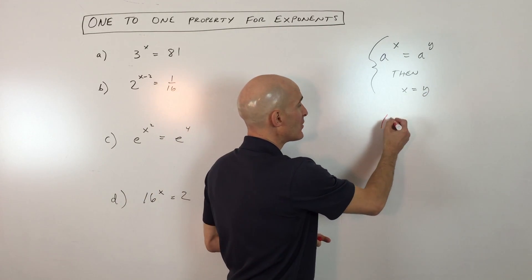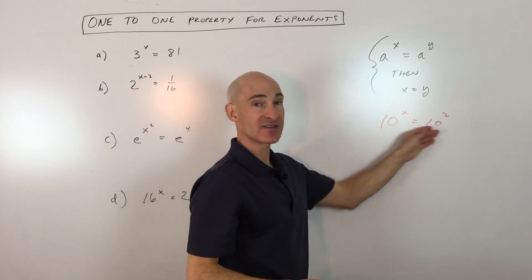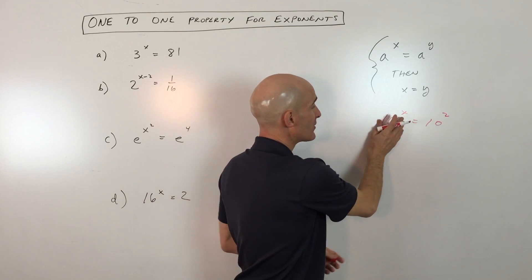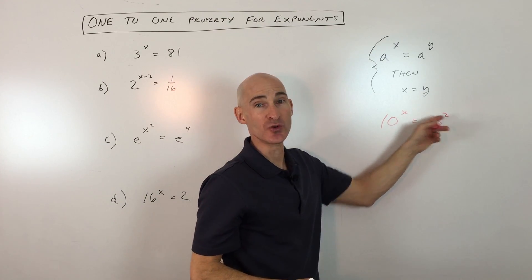So a very simple example would be if you had 10 to the x equals 10 squared, the only way that this left side could equal this right side, given that the bases are the same, is that the exponents also have to be the same, so x would equal 2. Now that's a simple example.